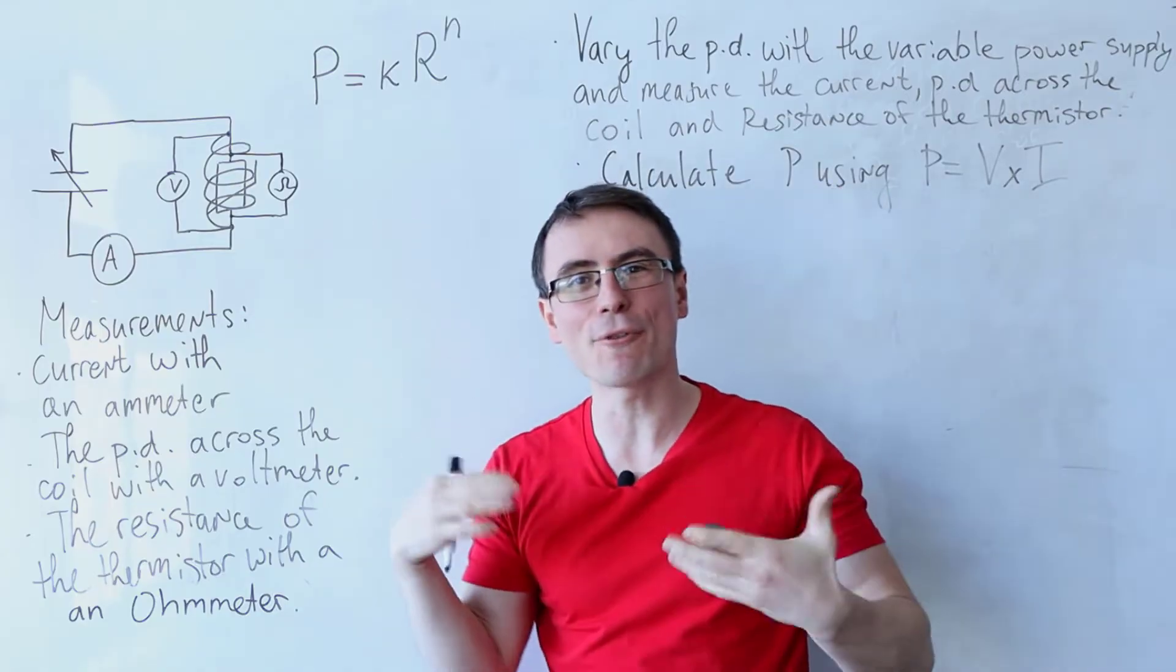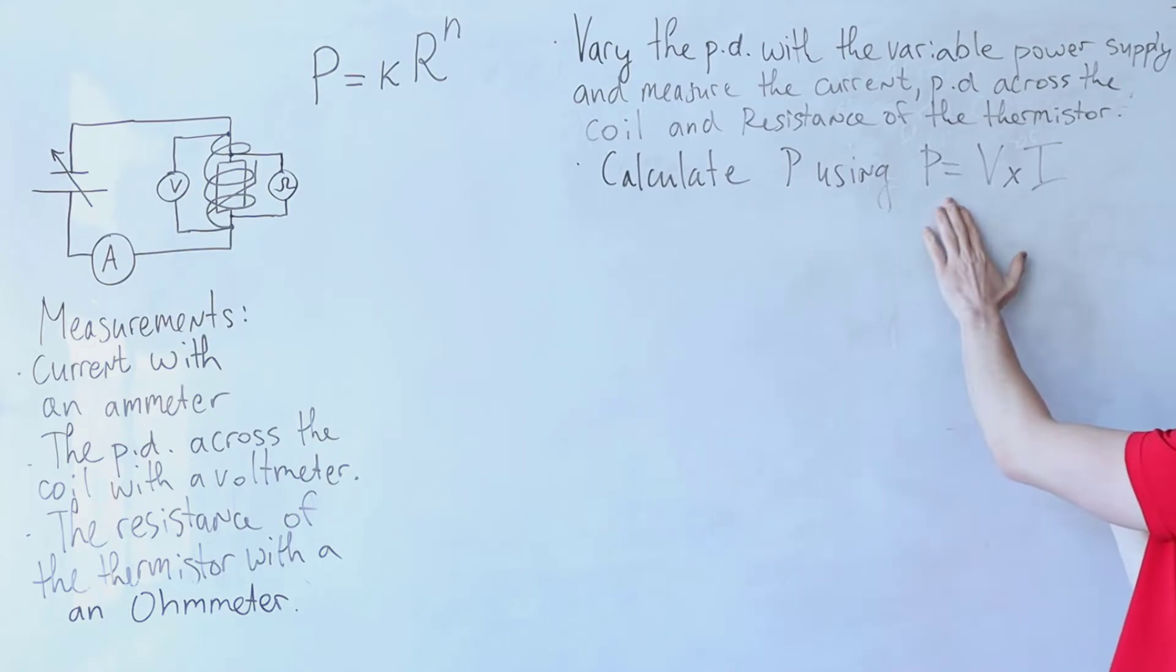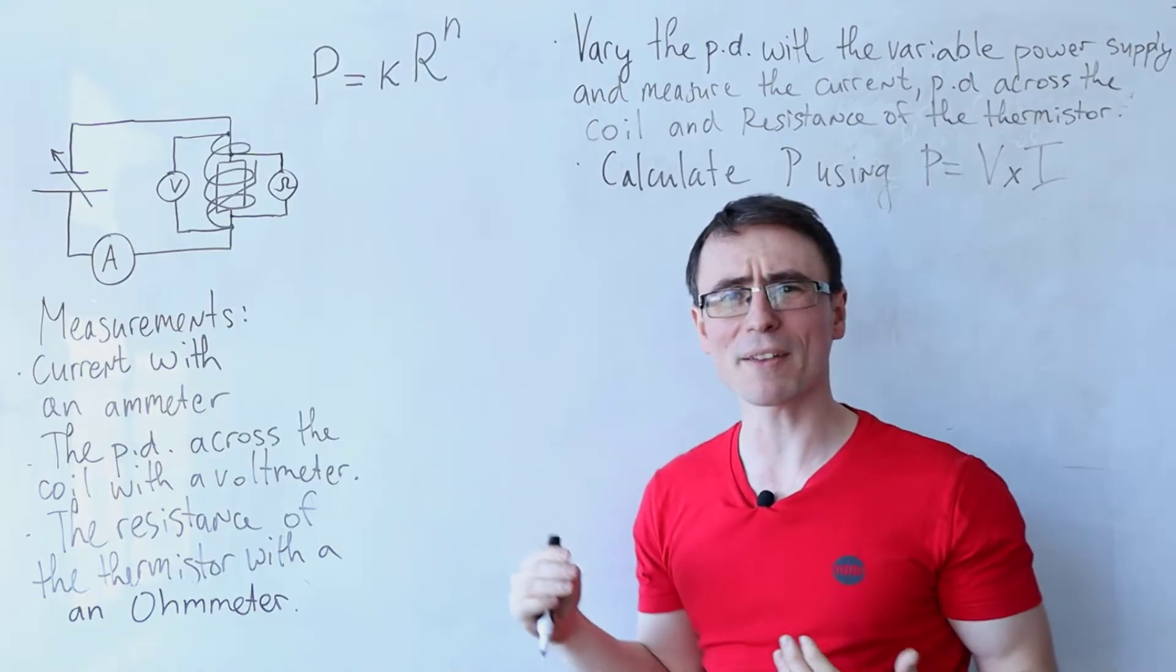Because this equation involves power, I'm also going to be calculating the power using P equals V multiplied by I. Now here's a little mathematical trick.